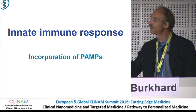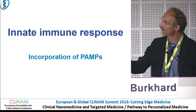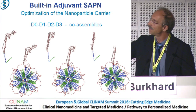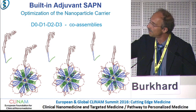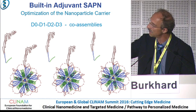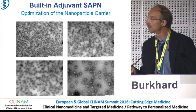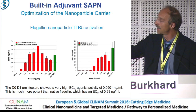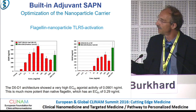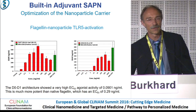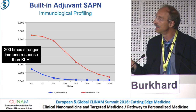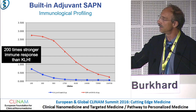The third immune response we want to address is the innate immune response. There are some molecules called PAMPs — one of them is flagellin. Flagellin stimulates the innate immune response. Since it's a protein, we can simply attach it to the peptide chain forming the particle and make a co-assembly: a peptide chain with the B-cell epitope decorated in red, incorporating just one flagellin molecule in the particle. It forms beautiful particles, stimulates the TLR5 receptor quite strongly — even stronger than native flagellin itself. We get a 200-times stronger immune response from our particles than from KLH, which is one of the standard vaccine carriers currently in use.